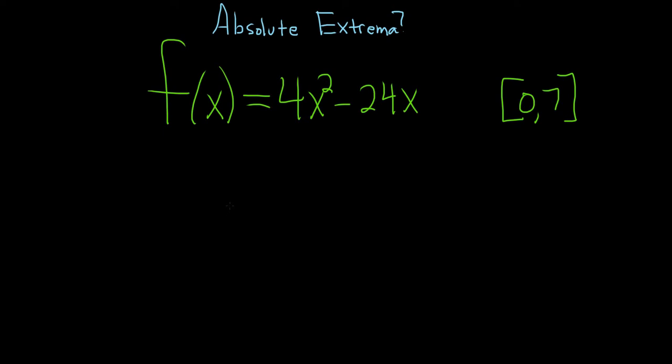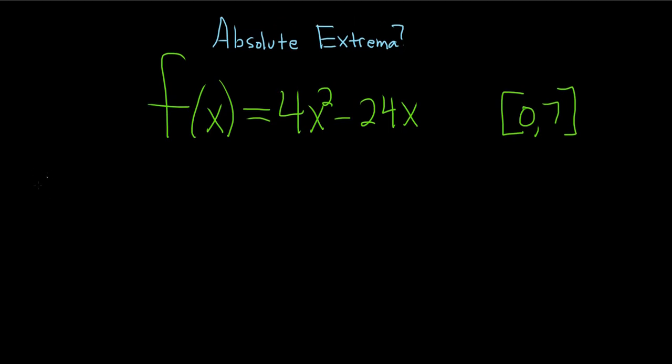In this problem, we have to find the absolute extrema of this function on this interval. So the steps are as follows. Step one in a problem like this is to find the critical numbers that are between 0 and 7. So you start by taking the derivative, so f prime of x.